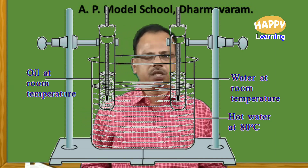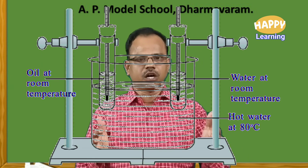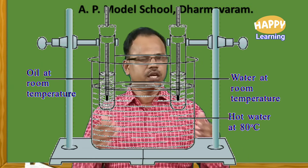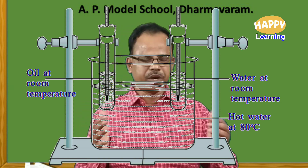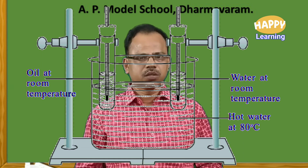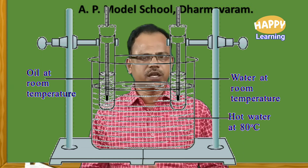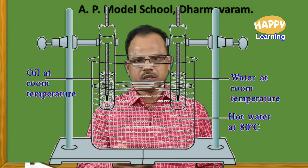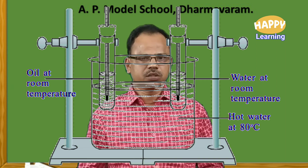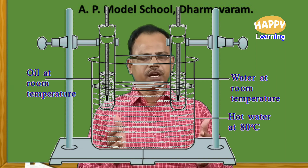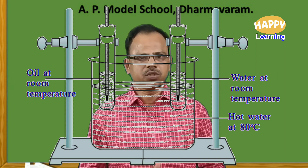As shown in this picture, take a big jar — here it is a glass jar, transparent, sufficiently big. Take hot water in it; the temperature may be 60, 70, or 80 degrees — your choice. Take hot water in this cylinder jar.